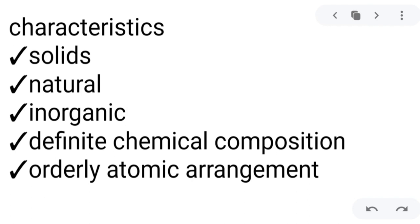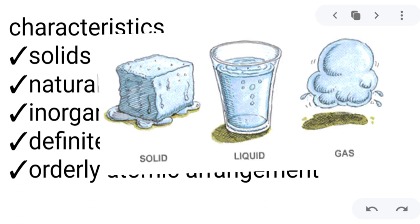First, all minerals are solids — they must be solid in all conditions. For example, ice: can it be a mineral? It is solid, but it is not stable in all conditions, meaning to say at room temperature it can be converted into liquid. So therefore, it can't be a mineral. It must be solid in all conditions.